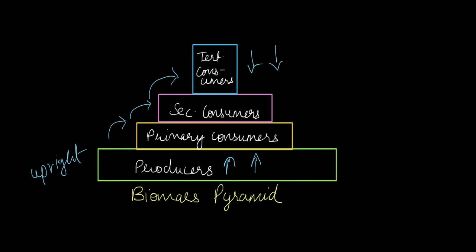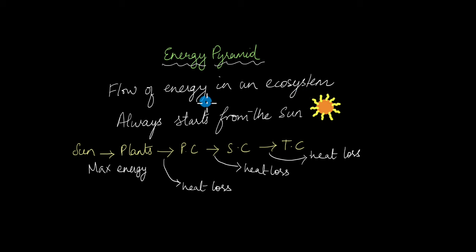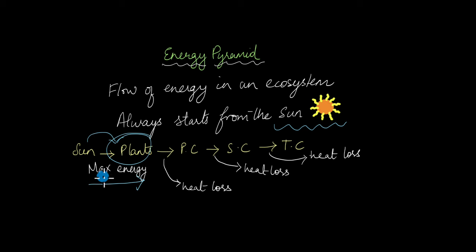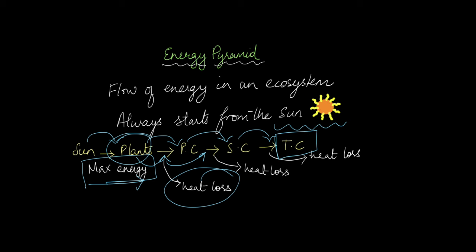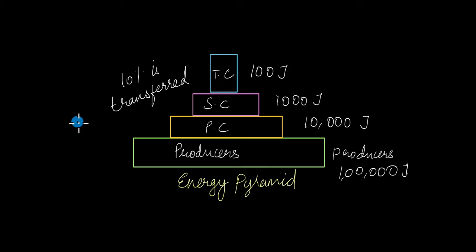Next we will talk about energy pyramids. Energy pyramids show the flow of energy in an ecosystem, and the flow always starts from the sun. The sun is the main source of energy for plants and other photosynthesizing organisms. When plants absorb energy from the sun, they absorb the maximum amount. Each time we go up a trophic level there is heat loss occurring, which means a lot of energy is lost as heat and only some energy is transferred from one trophic level to the next. So we always start with the highest amount of energy in plants, and as we go up the trophic level we have the least amount of energy in the tertiary consumers. If you were to plot this as a graph stacked starting with producers at the base, you would get an energy pyramid.